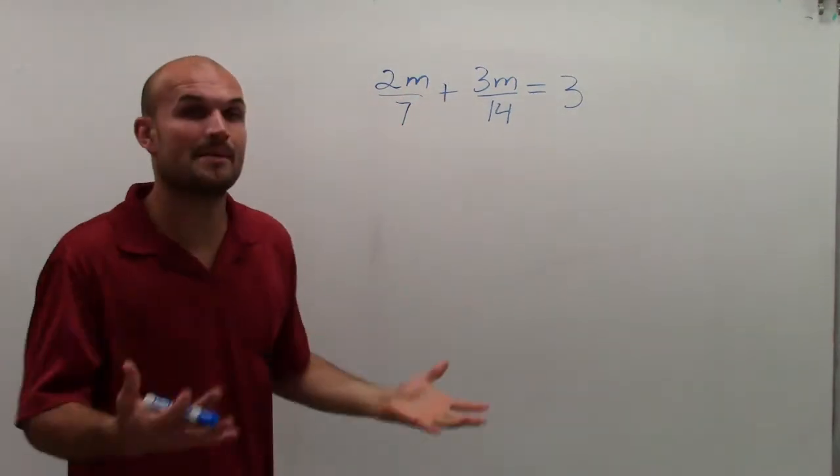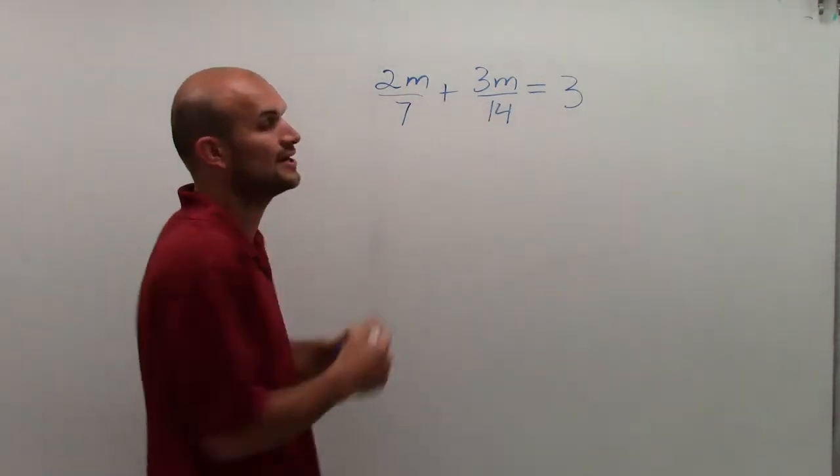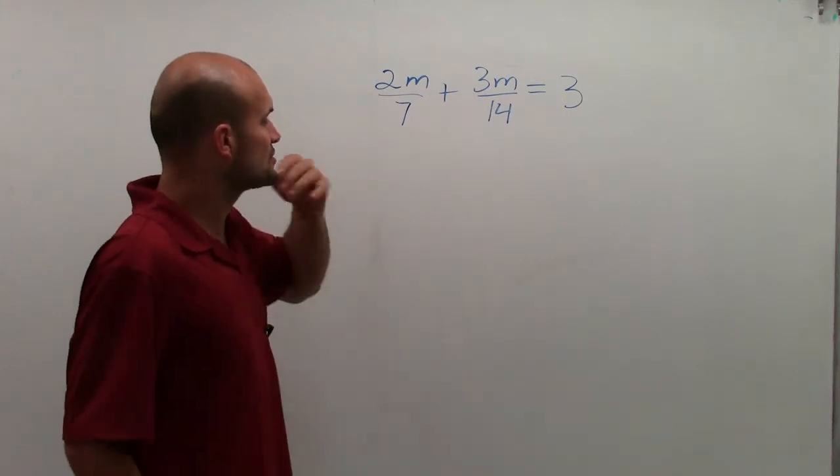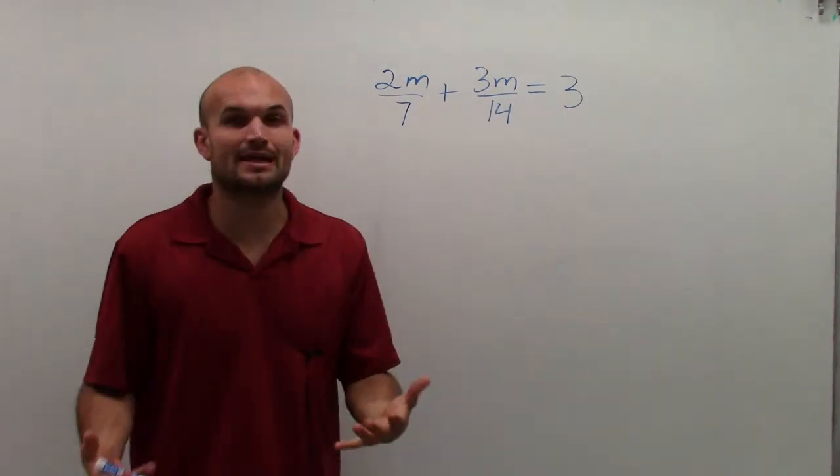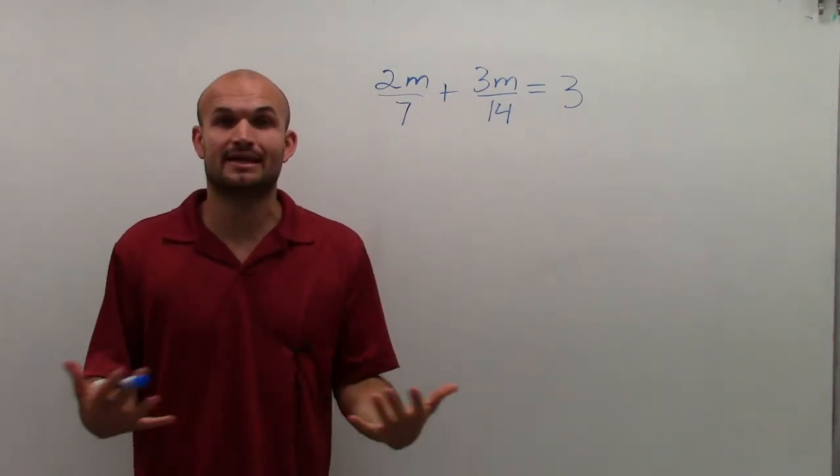So I need to add these fractions. Remember, when adding fractions, your denominators have to be the same. So to get these to be the same, I need to look at what is the smallest number that they could be the same for.